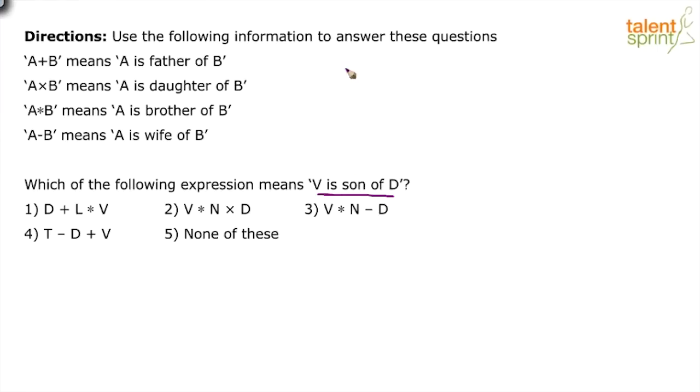One technique that can be used here is what we discussed in the blood relations model 2. If you've gone through that video, we discussed something called the gender and generation gap technique. You can eliminate options based on two points: the gender and the generation gap.